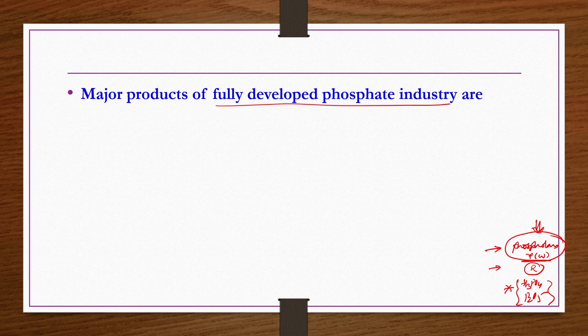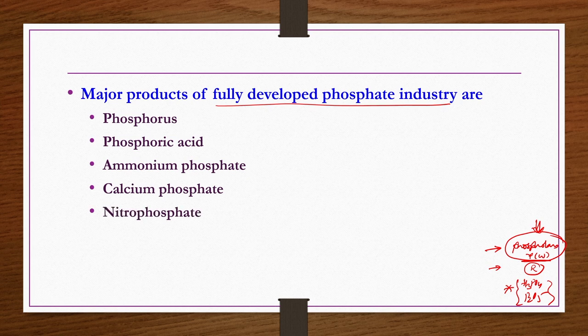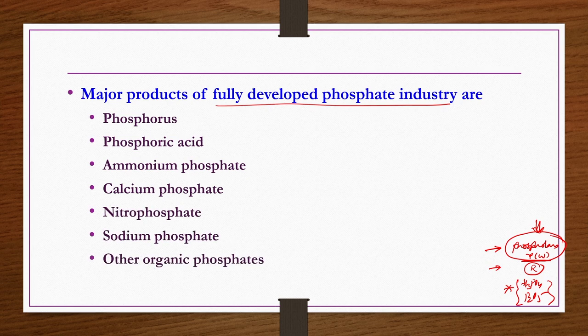Major products of a fully developed phosphate industry include elemental phosphorus, phosphoric acid, ammonium phosphate, calcium phosphate, nitrophosphate, sodium phosphate, and several types of organic phosphates. Ammonium phosphate and calcium phosphate are also known as mixed chemical fertilizers.